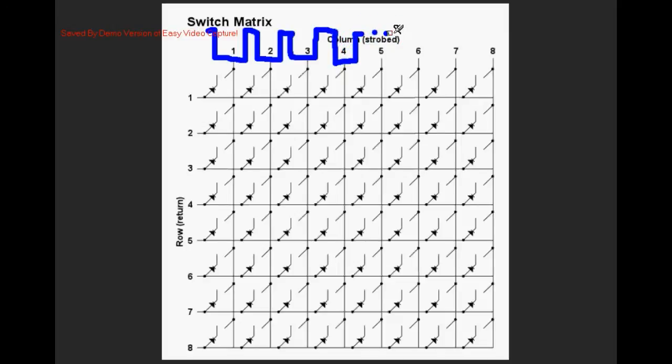As the system drives each column low it monitors all of the rows looking for the rows to go low which they will if a switch is closed.